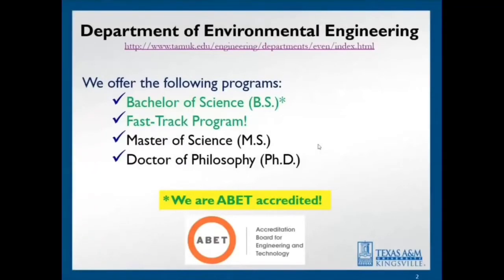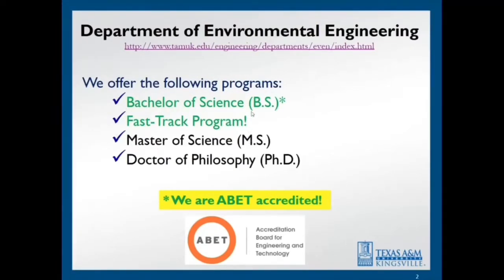We offer a comprehensive education in environmental engineering, not only at the Bachelor of Science level, but also at the Master's of Science and Doctoral of Philosophy degree levels. We also have a fast track program. For those of you who are interested in not only getting a Bachelor of Science degree, but also a Master of Science degree in less time, we are offering this accelerated program in which you can earn these two degrees in four years.